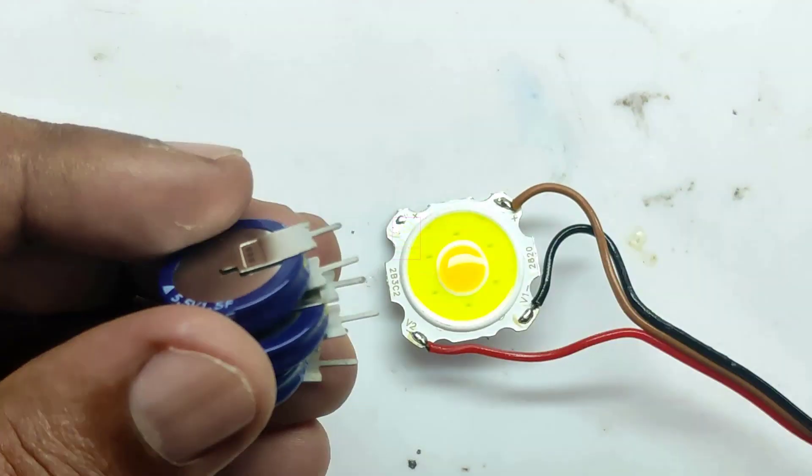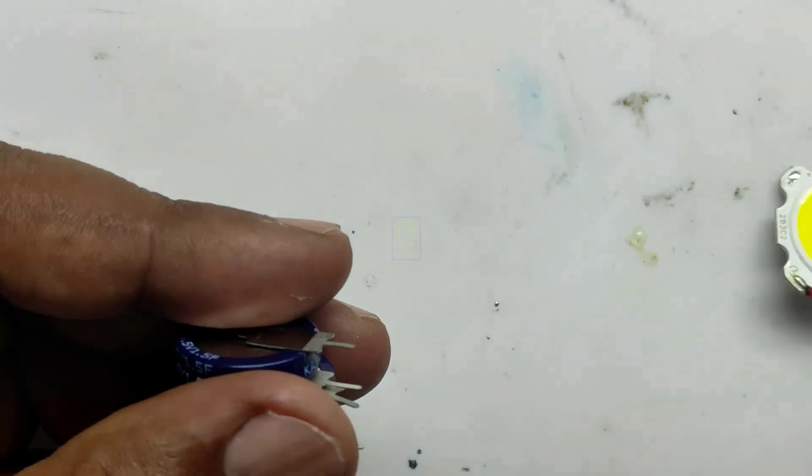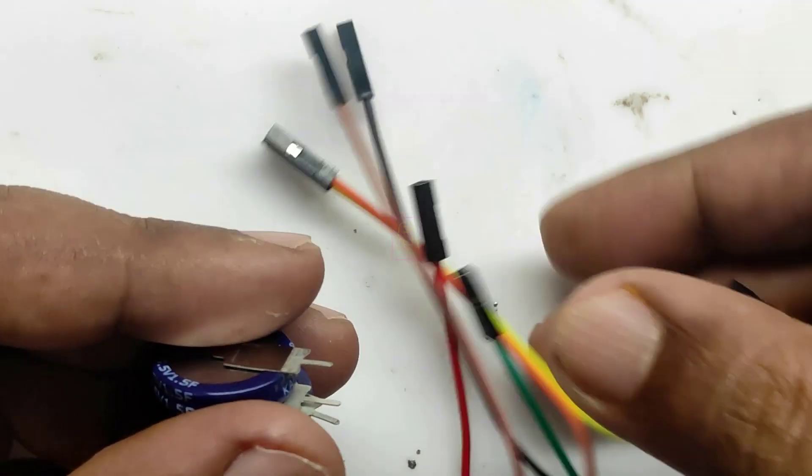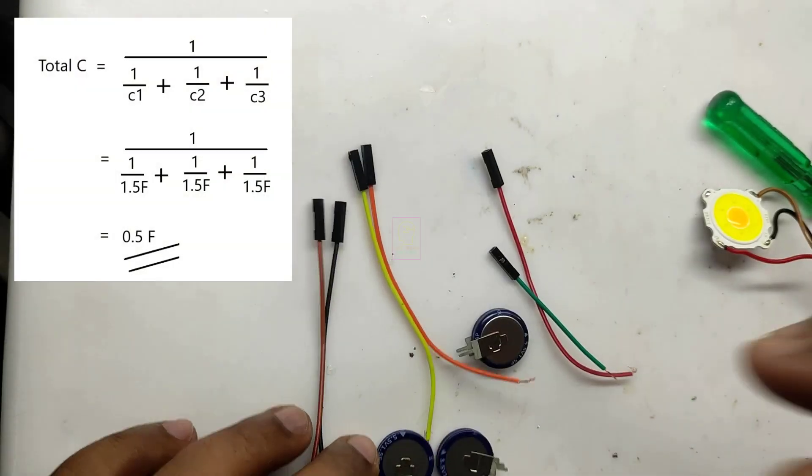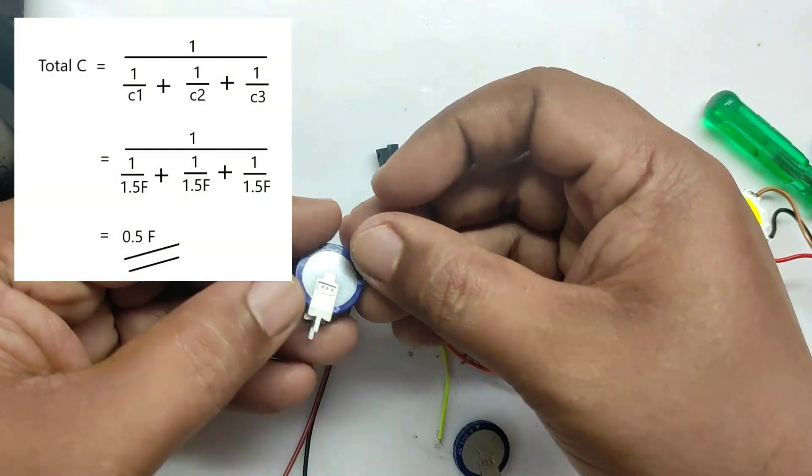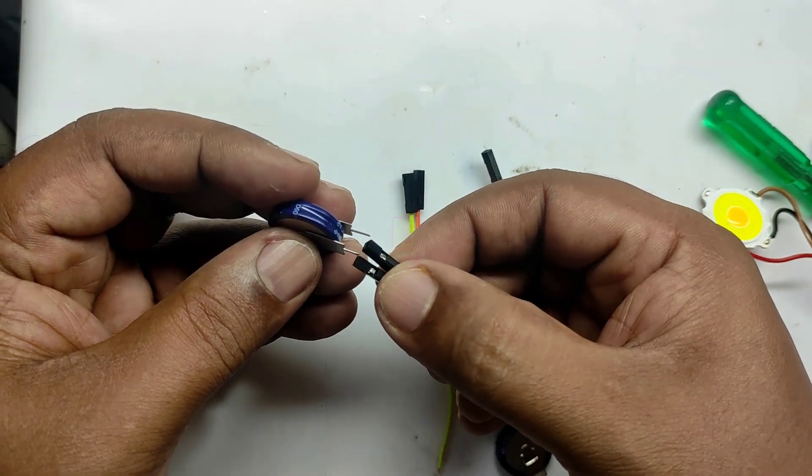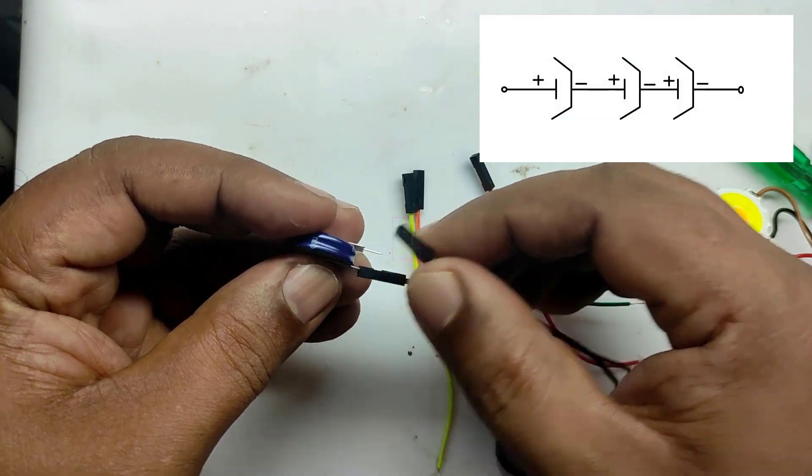We are not going to solder these capacitors. Instead, we will be using female socket wires to connect these capacitors in series, so the total capacitance will be 0.5 farad. Super capacitors with 3000 farads are also available in the market. This is the way we are connecting the capacitors in series.